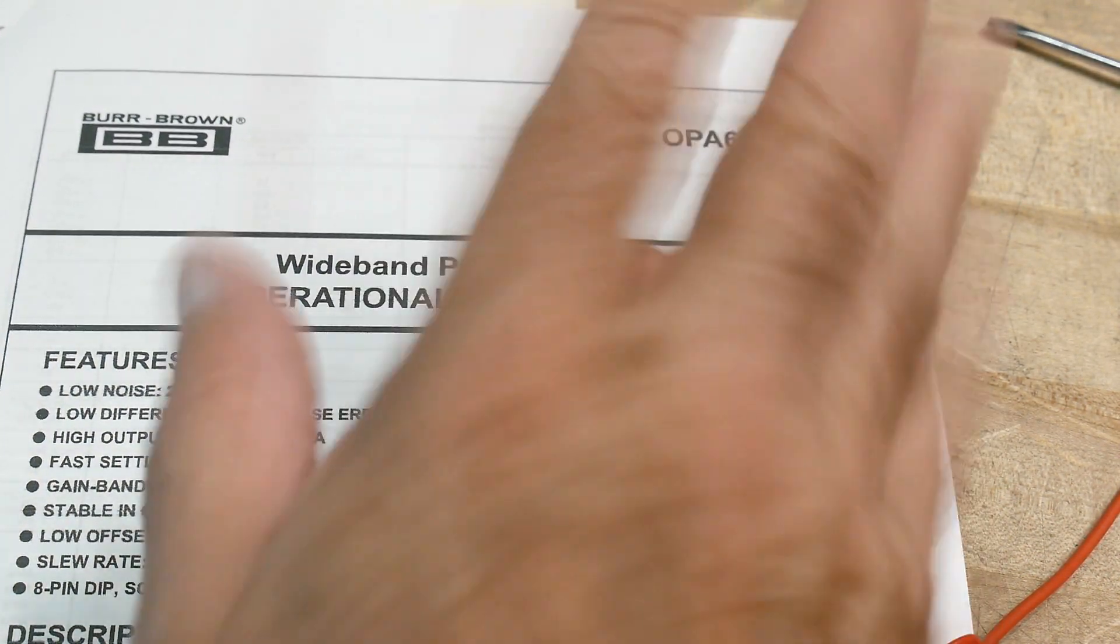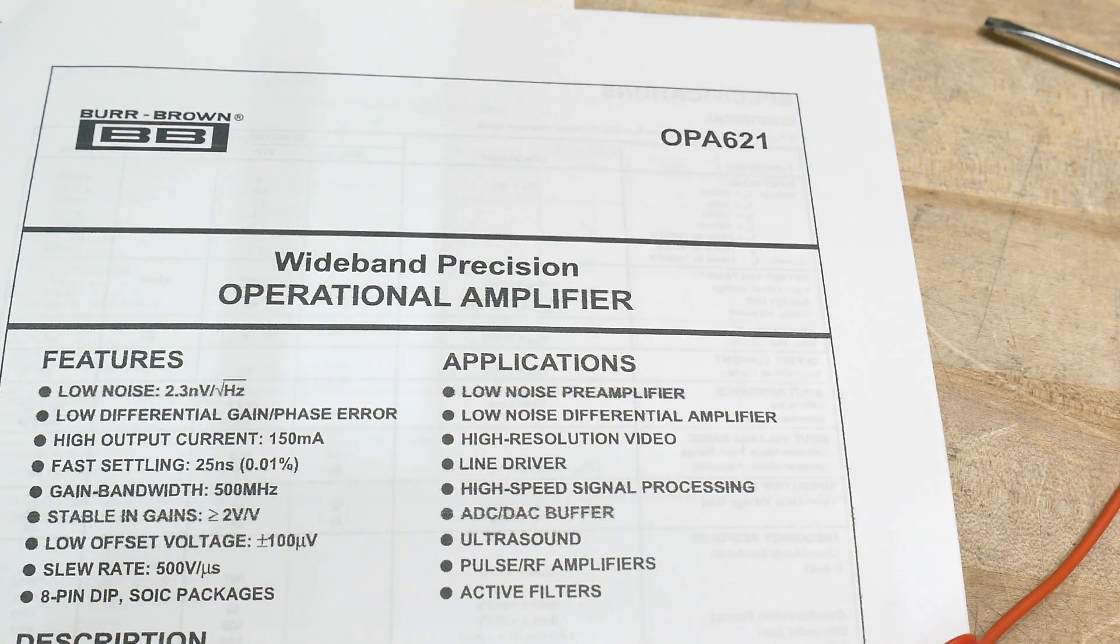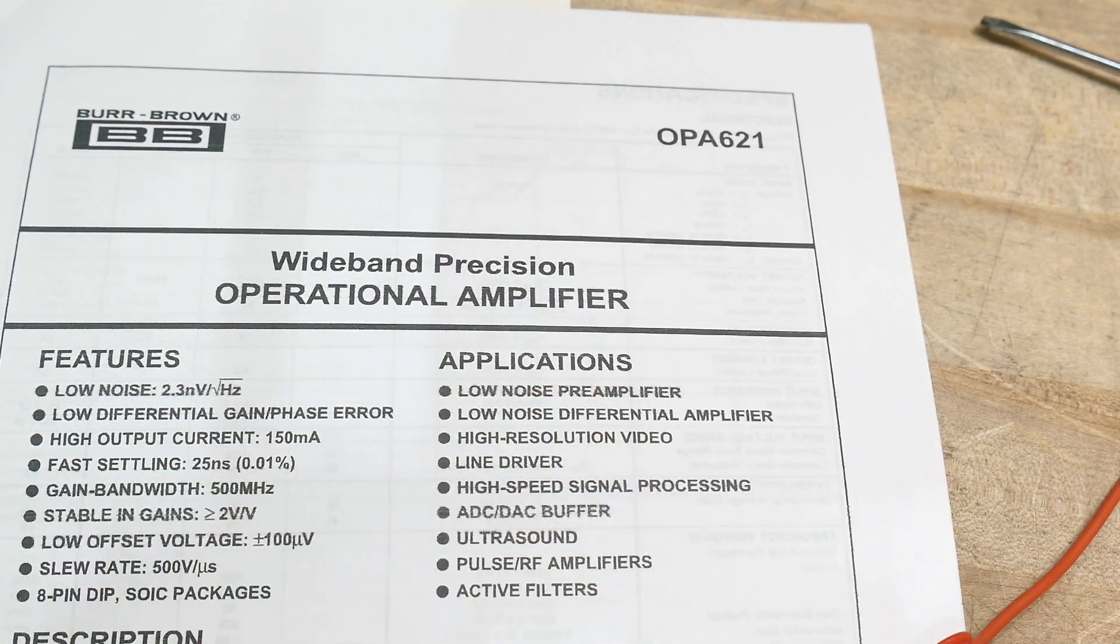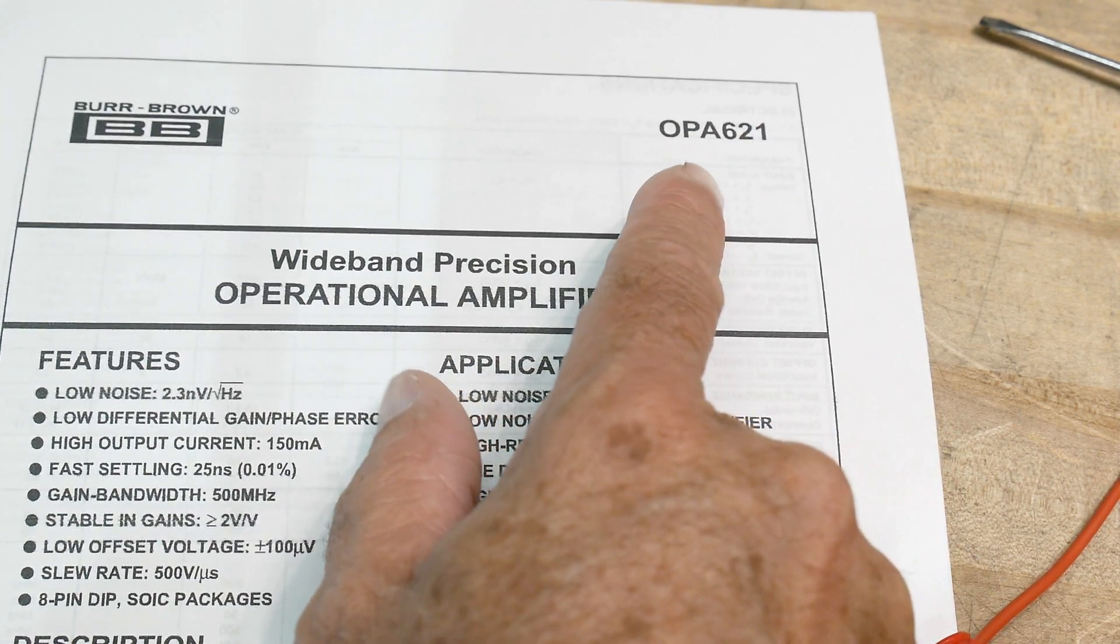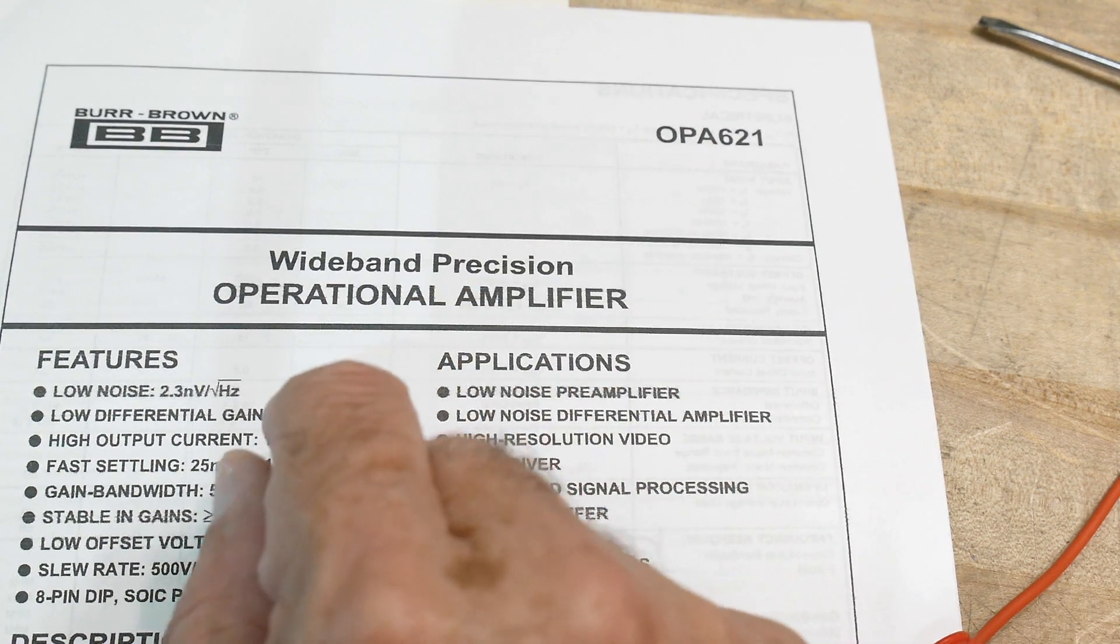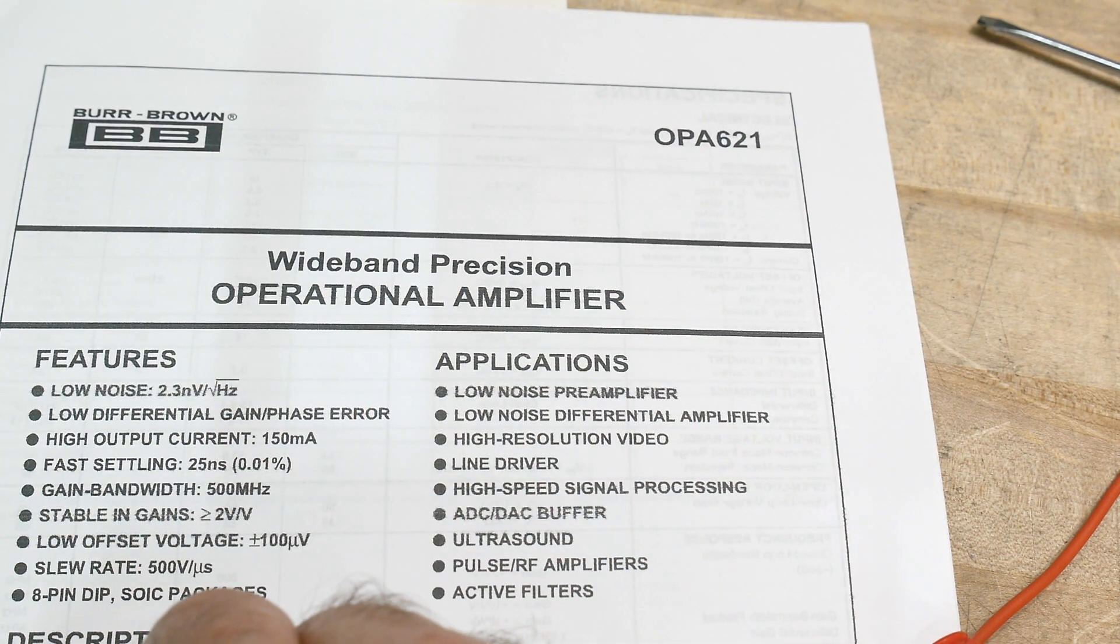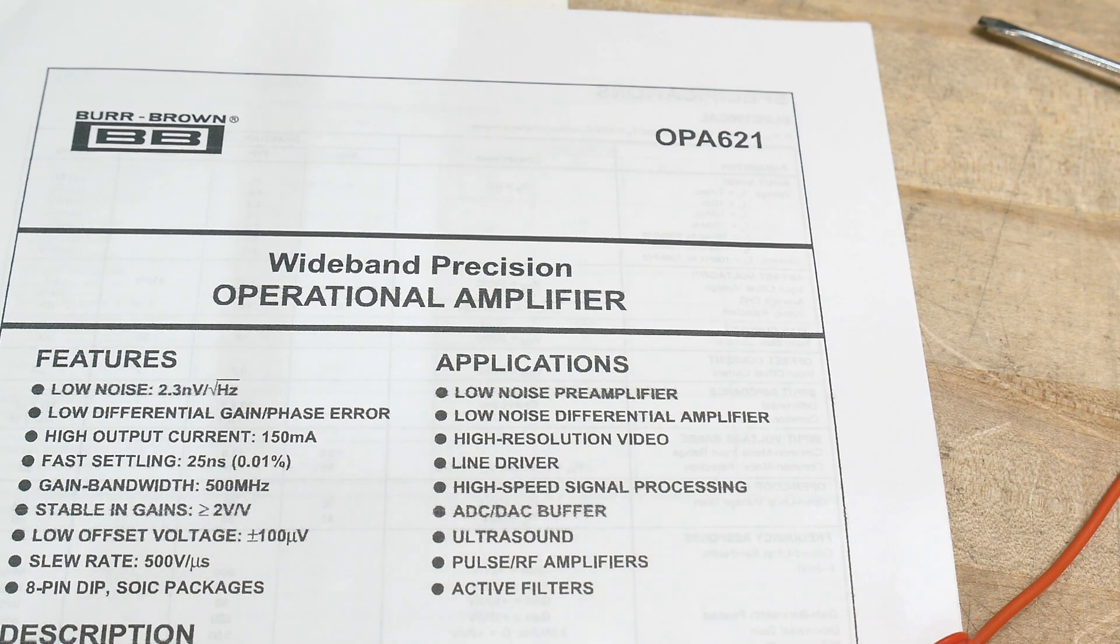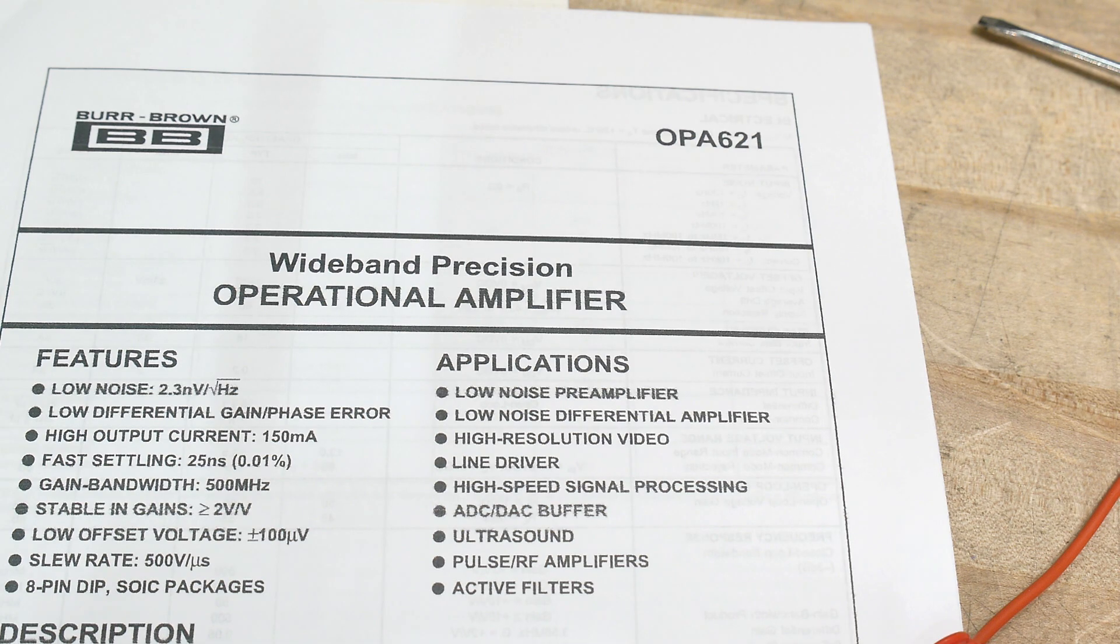I tried looking up the price but I don't think they're made anymore, so nobody's got them. I think on the used market they're like a ten dollar op-amp or something. Comment below if you know what a good modern replacement is for the OPA621. Chip of the day: the OPA621, a very nice fast op-amp.